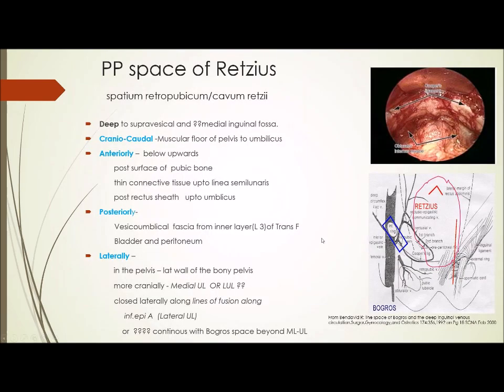Coming to the pre-peritoneal spaces - these are important because structures lie here, and when we were studying hernia in the 18th century, we never knew about these spaces. They existed, but this anatomy was not important at that time because we were never entering this area in such a big way. When laparoscopic approaches came, we began entering primarily this area, so we need to understand it. There are two important spaces here, because all dissection in laparoscopic hernia repair is performed in this area.